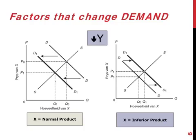The opposite holds for a decrease in income. If income is less, you will buy less of a normal product. The whole demand curve moves towards the left, and the equilibrium price and equilibrium quantity are both lower.